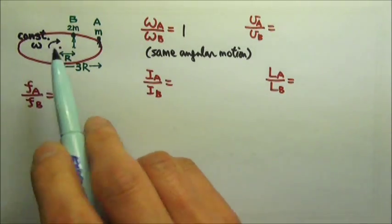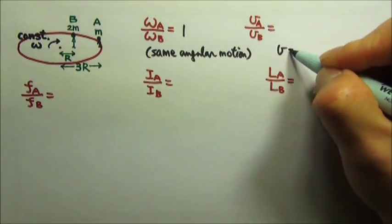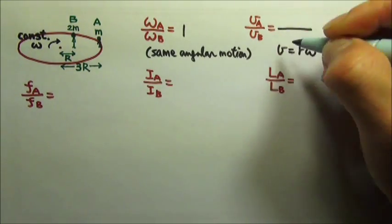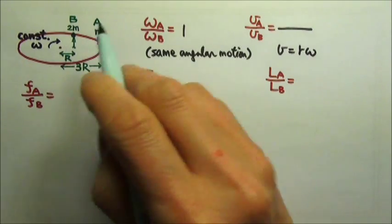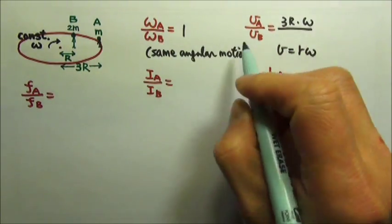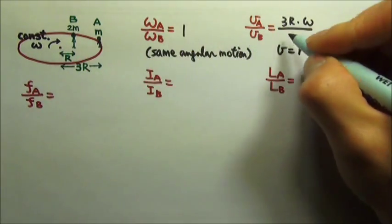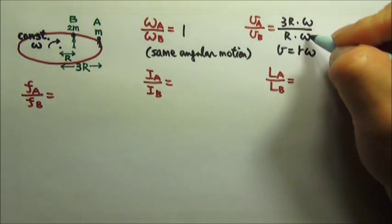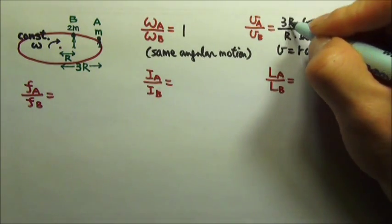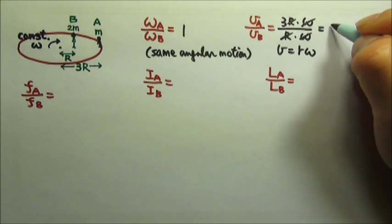They rotate about a fixed axis, so V equals r omega. For A, the radius is 3r and omega is omega. For B, the radius is r and the angular speed is also omega. So the omegas cancel, the r's cancel, and we get 3.